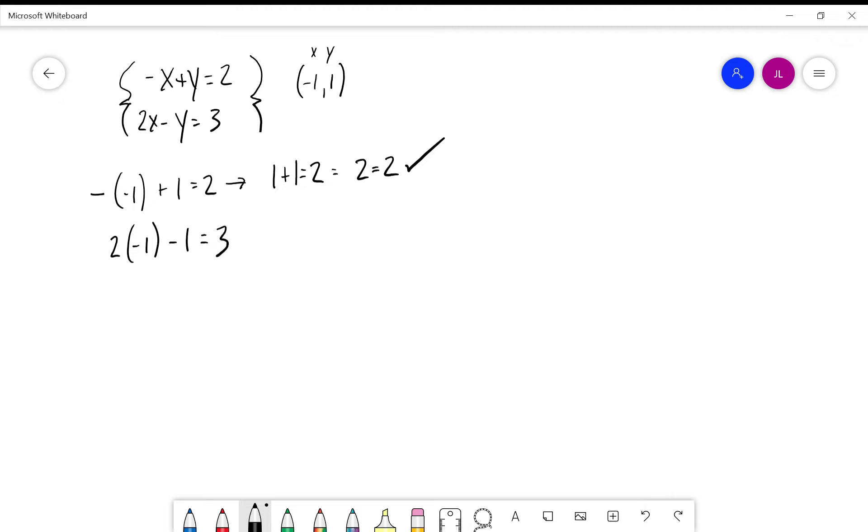Let's look at this: 2 times negative 1 is negative 2, minus 1 equals negative 3. Negative 3 equals negative 3—that checks. So we know this point negative 1, 1 is a solution to both of these linear equations in two variables. This would be a solution to the system because it makes both statements true.